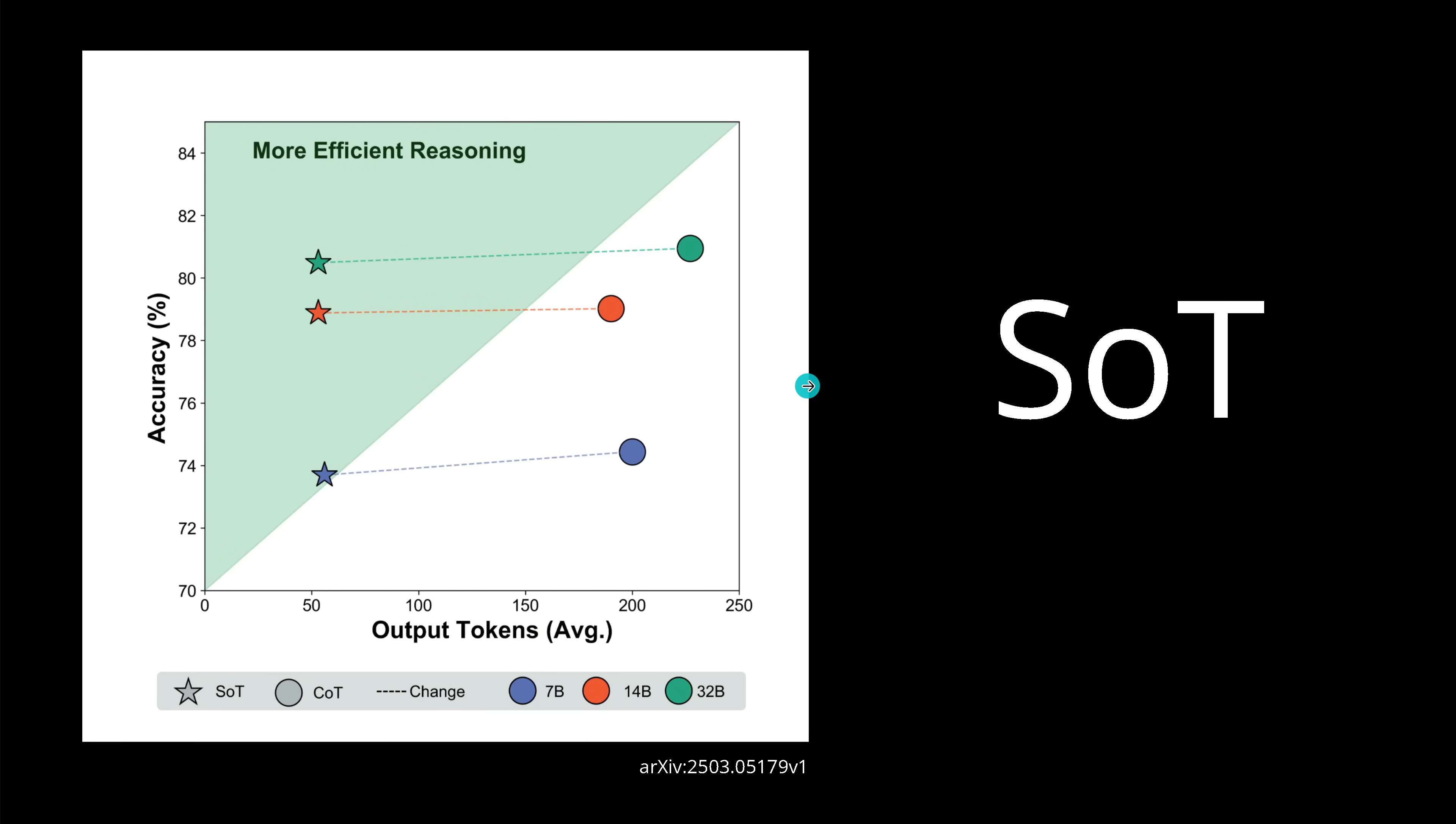And the first thing I saw was this graph. So we have here on the x-axis the output tokens, the number of tokens, and here the accuracy of the system. So you see, we have now a move from 200 tokens down to 50 tokens of the system, but we see if we look at the accuracy, it is almost a horizontal line. So we lose a little bit of performance, but we can reduce the number of tokens significantly. And this is true for 7B, for 14B, and for 32B billion free trainable parameter LLMs. So let's have a closer look.